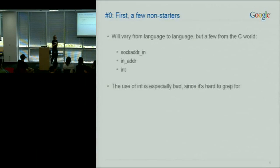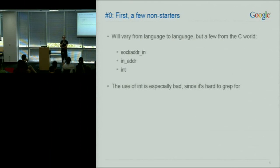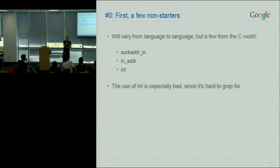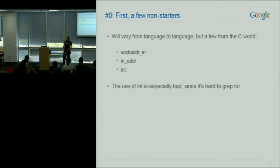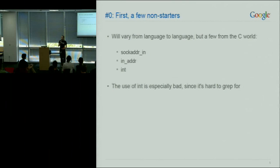Let's look at different ways of representing addresses. A few things you should avoid: sockaddr_in, which is an IPv4 address; in_addr, which is an IPv4 address without a port; and int, which is unfortunately very common. Inside Google I've seen lots of hideous variations — typedefs, structs containing them, people using 64-bit int. I don't think I've seen anyone represent an IP address as a floating point number yet, but I wouldn't be surprised.